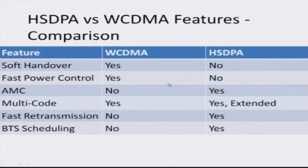A summary table covers some of the advanced features of HSDPA: soft handover which increases signal strength, fast power control which increases reliability, adaptive modulation and coding, multi-code transmission, fast retransmission to retransmit dropped packets thereby decreasing delivery time, and scheduling of appropriate users to increase overall efficiency. That concludes this brief introduction to the third generation wireless communication standard WCDMA, its various features, and some of the salient aspects. Thank you.